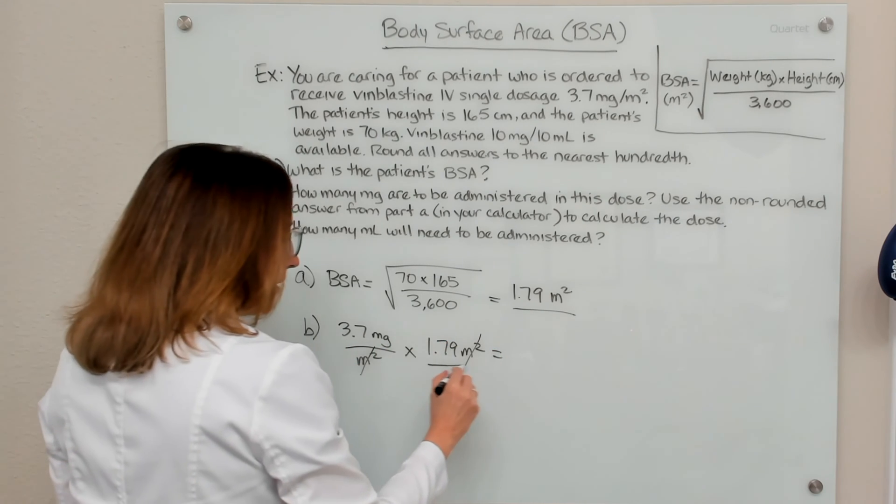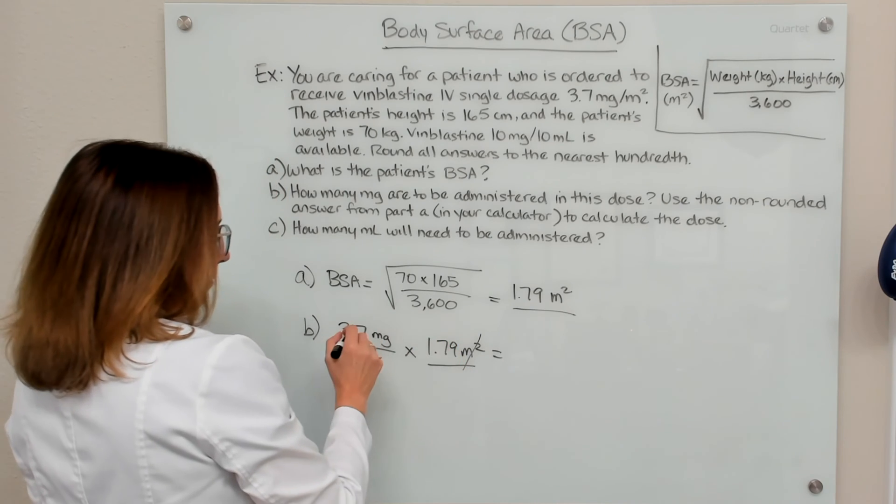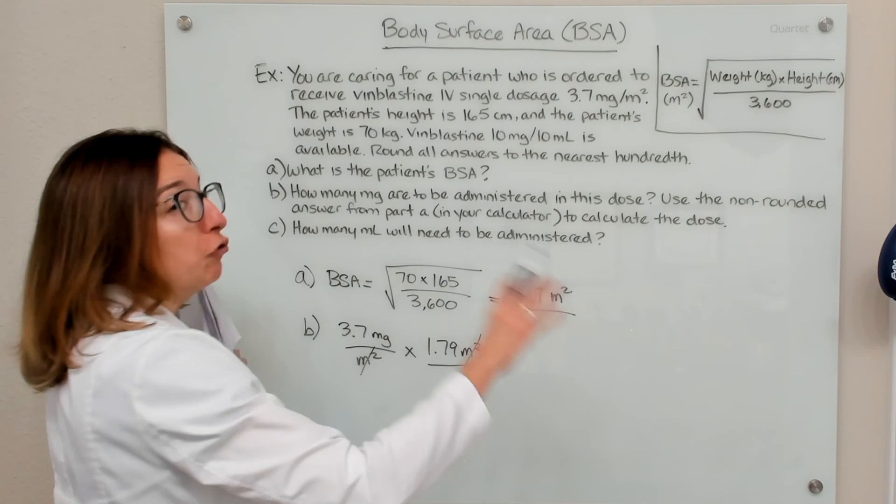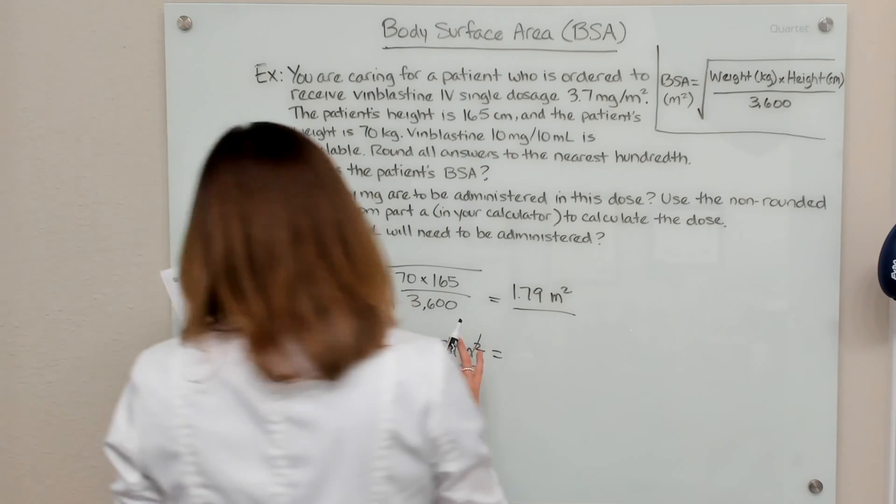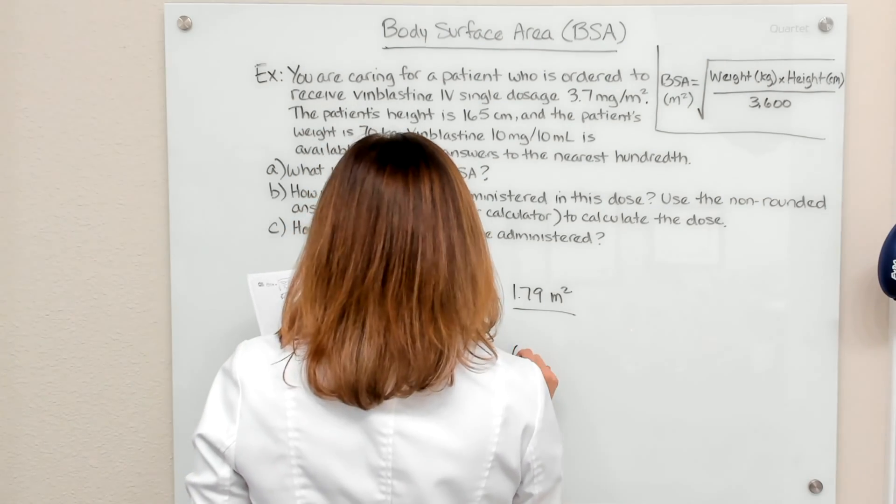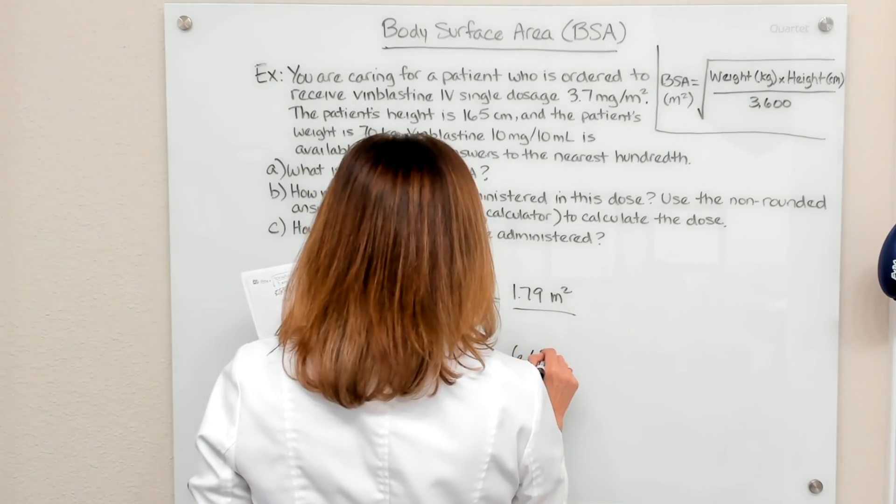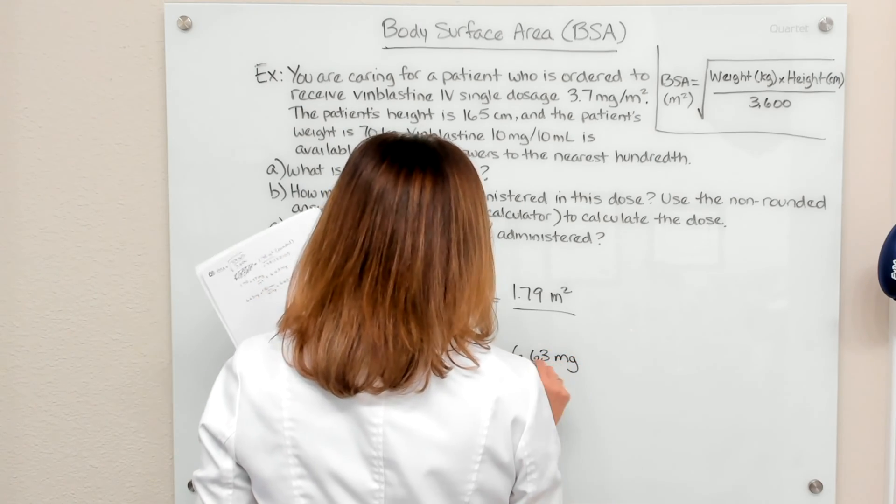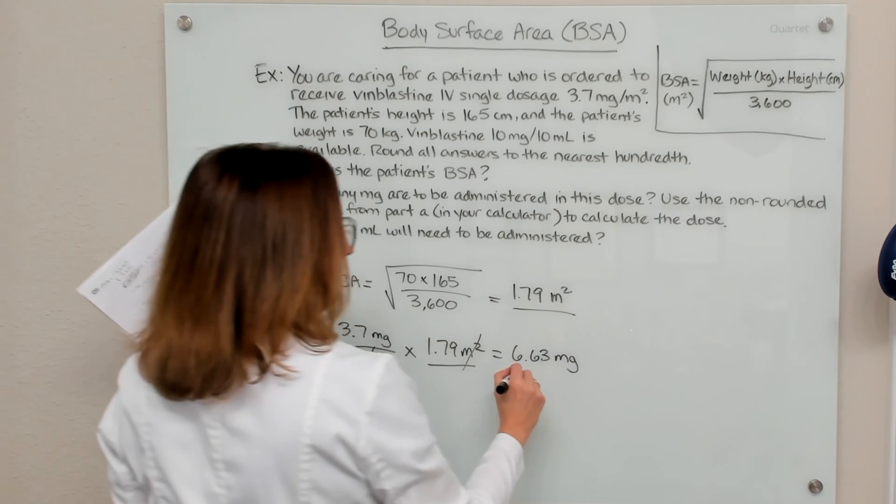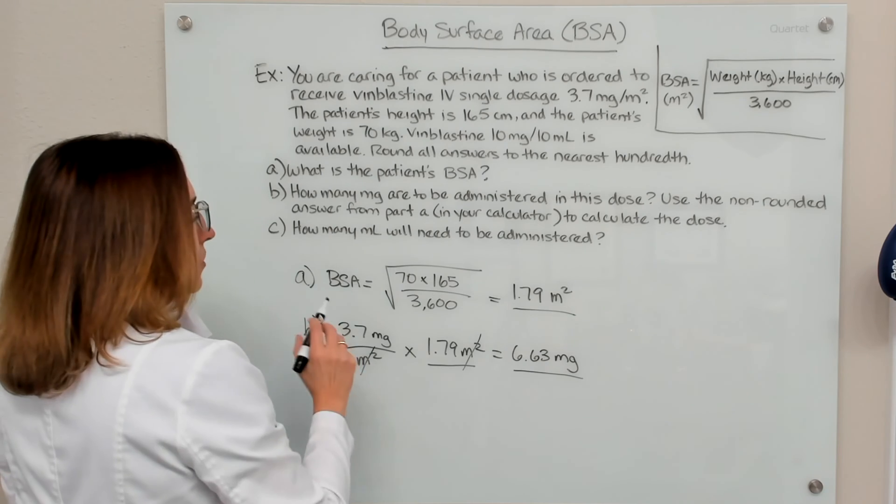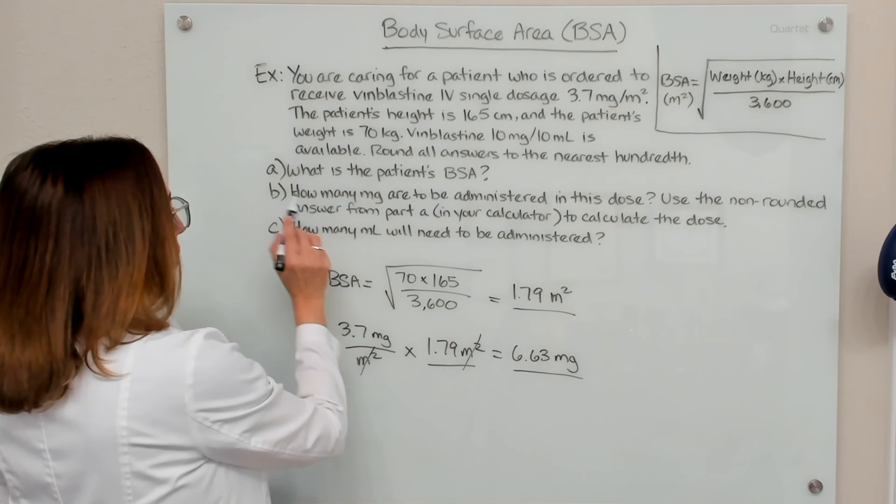But again, this number that you're going to multiply 3.7 by is going to be the full number in your calculator. So when you do that math, you end up with 6.63 milligrams. And that is rounded also to the nearest hundredth. So that is the answer to part B.